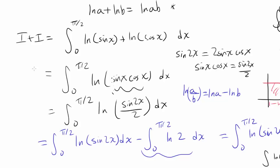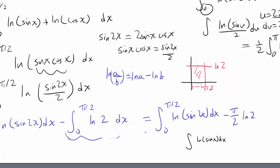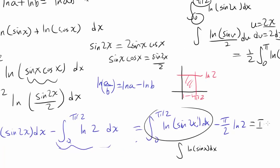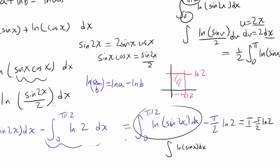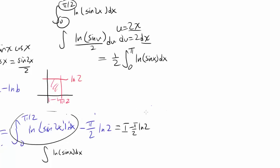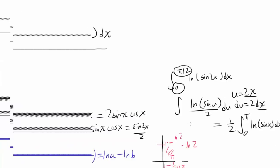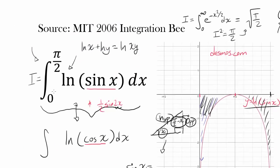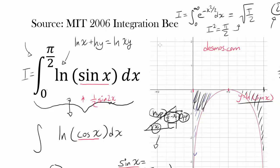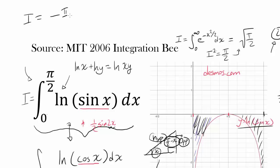So putting it all together: we started with 2I, and after all substitutions that first integral turned out to equal I, so we have 2I = I − (π/2)·ln(2). Subtracting I from both sides gives I = −(π/2)·ln(2). Therefore, the integral from 0 to π/2 of ln(sin x) dx equals −(π/2)·ln(2), and we are done.